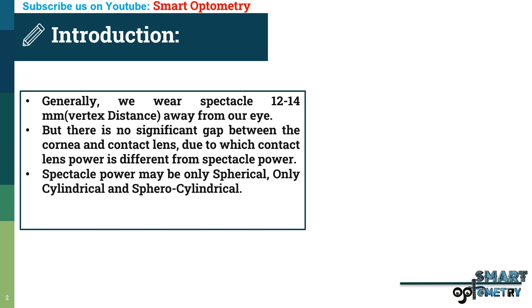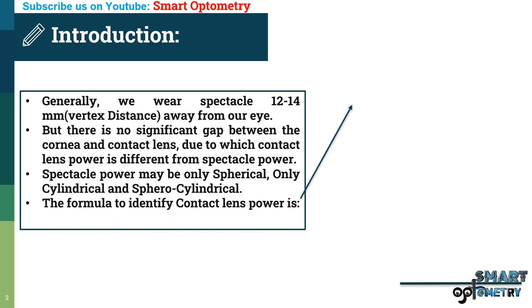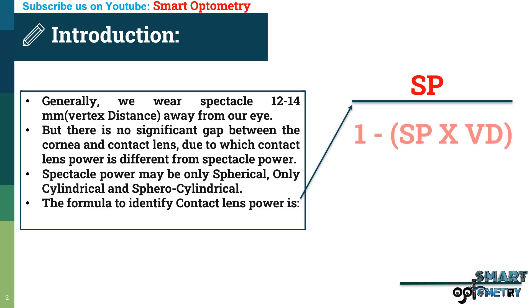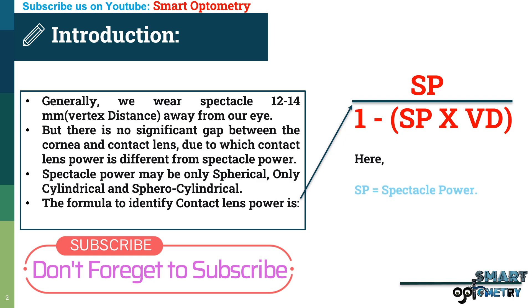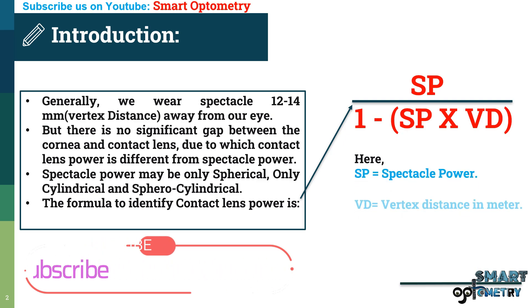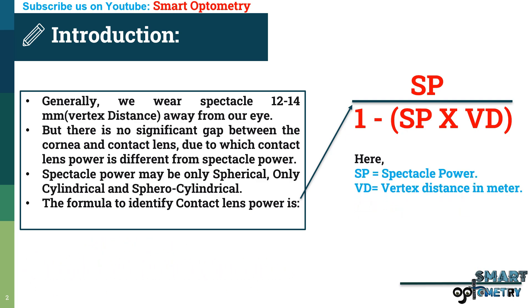Spectacle power may be only spherical, only cylindrical, or sphero-cylindrical. The formula to identify contact lens power is: SP divided by (1 minus SP multiplied by VD), where SP equals spectacle power and VD equals vertex distance in meters.